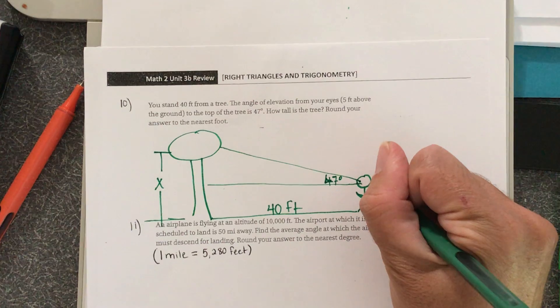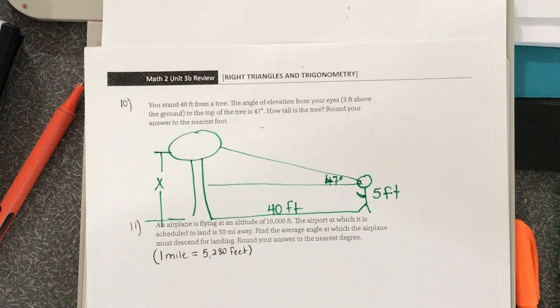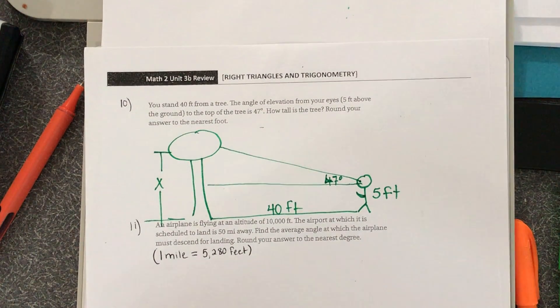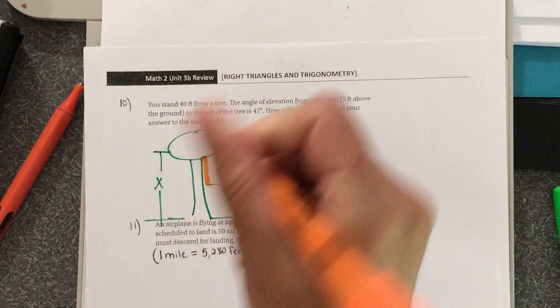Your line of sight, that height right there, is 5 feet. Alright, so first thing we're gonna do is figure out this height right here, which we'll call Y. We know that this is the 40.